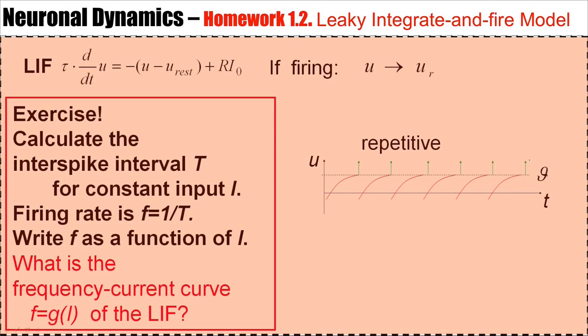Take the solution of the step current, calculate the time between two firings, the interval capital T. Look at the frequency defined as 1 over T, and write down this frequency as a function of the constant input. In short, the question is, what is the frequency-current curve of the leaky integrate-and-fire model?